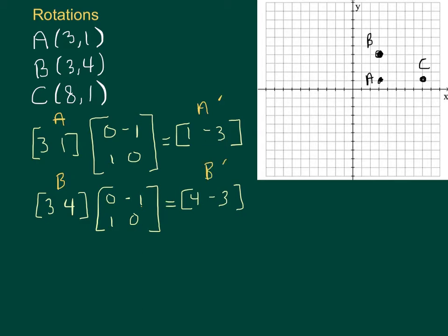And finally let's do C and C prime. So C is 8, 1. And when we multiply this out we get 8 times 0 plus 1 times 1 is 1, and 8 times negative 1 is negative 8 plus 1 times 0. We get that. So there's C prime.